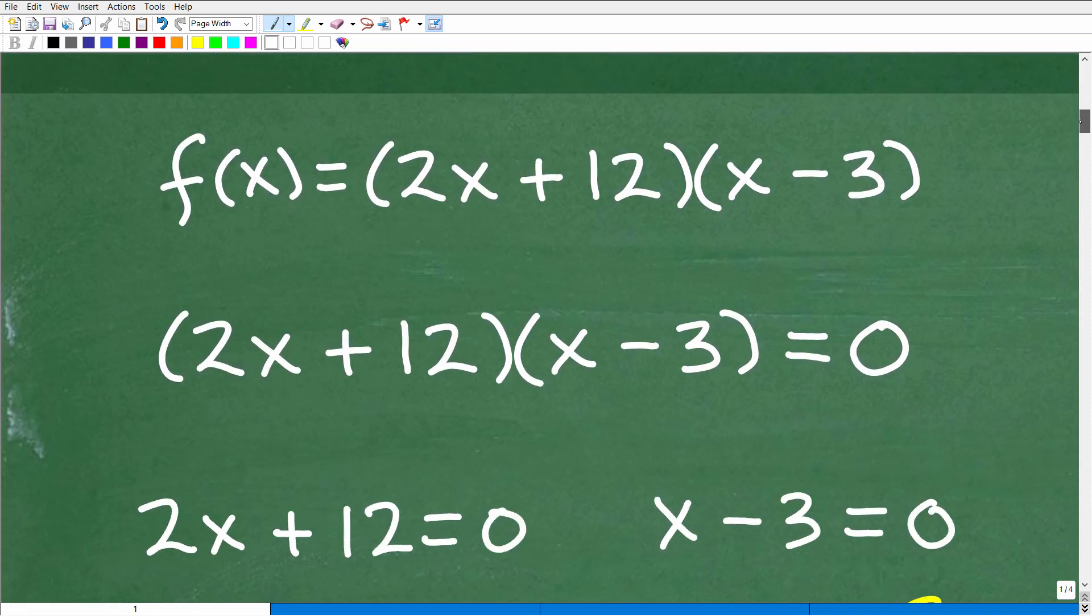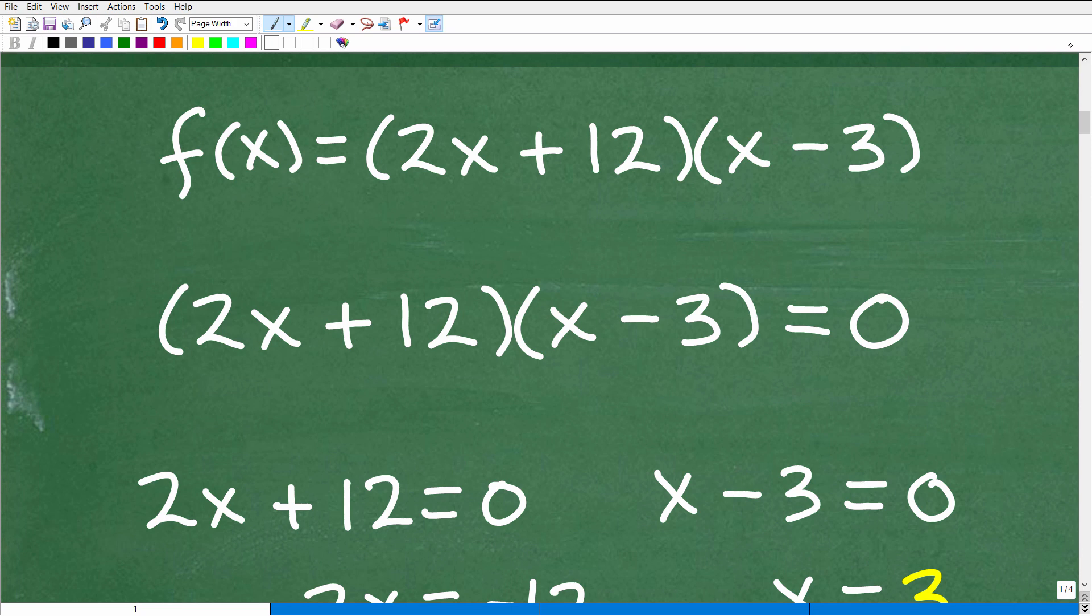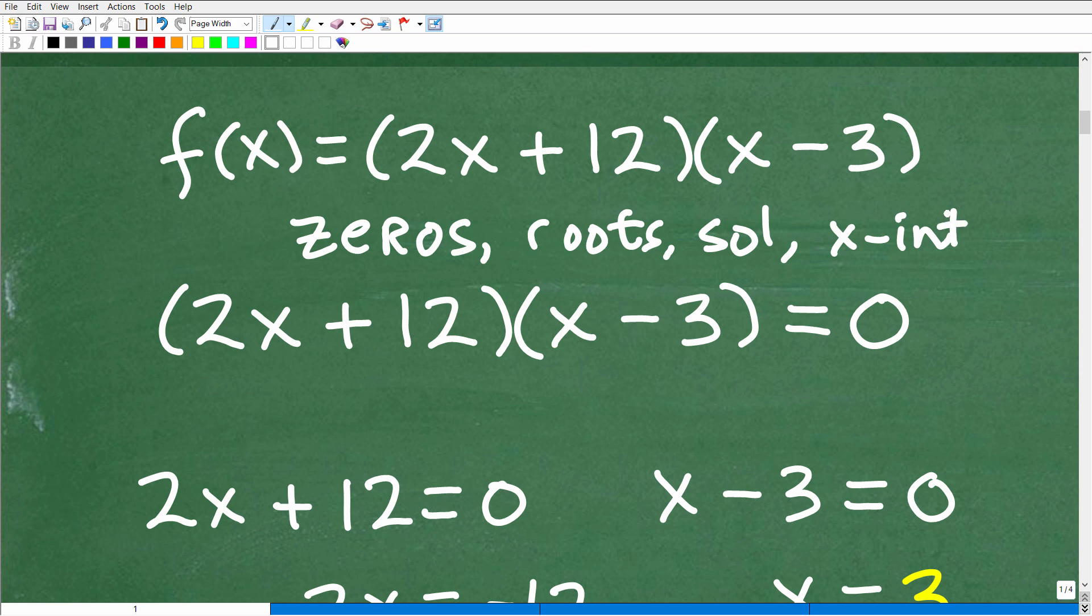And when we're solving or looking for the solutions for a polynomial function, there's another word for solutions. Let's kind of write this down. Sometimes you hear the word zeros or roots. These are solutions. We're also talking about x-intercepts, real number solutions. But these words right here, find the zeros, find the roots. For those of you out there that are familiar with the rational root theorem, we're talking about roots, or find the zeros.